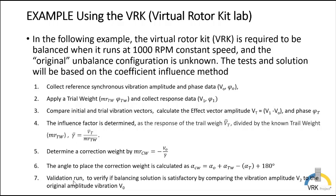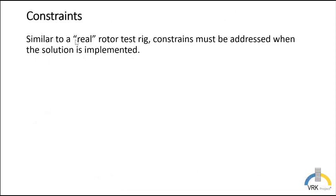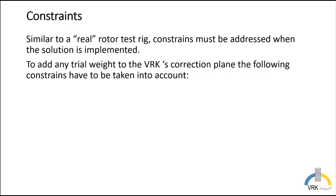And finally we will do a validation run to verify if the balancing solution is satisfactory by comparing the vibration of this validation run with the initial amplitude for the unbalanced rotor. Similar to a real rotor test rig, constraints will be addressed when the solution is implemented. To add any trail weight to the virtual rotor kit correction plane, the following constraints have to be taken into account.